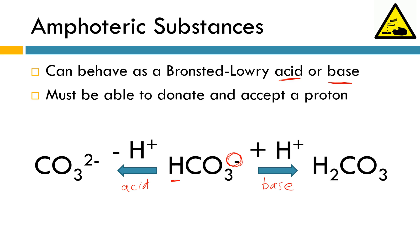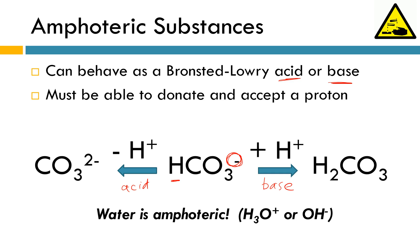One exception that's definitely worth writing down: water is able to behave amphoterically. We know from previous lessons that hydrogen ions can be gained by water to make hydronium, H3O+. And just a couple of minutes ago, we talked about how ammonia is able to steal a proton away from water — essentially, water is behaving as a proton donor to make hydroxide. So definitely write this down: water is amphoteric, and these are the two species we're able to make.